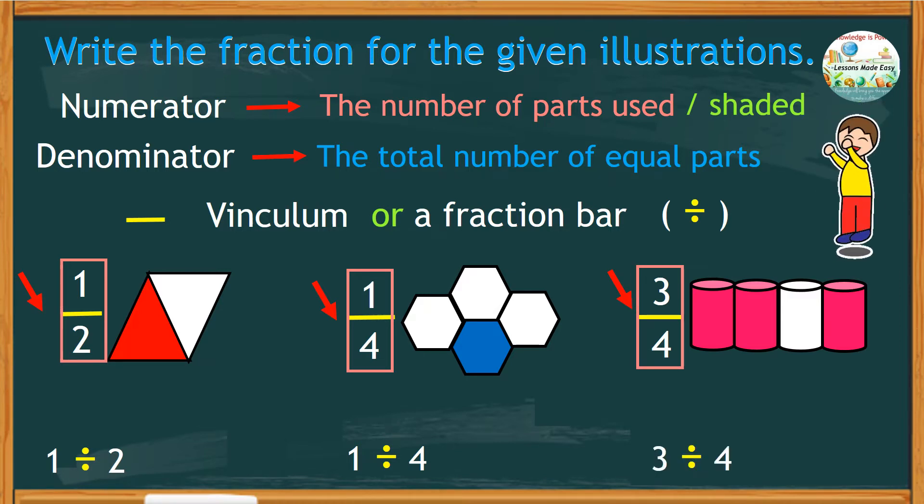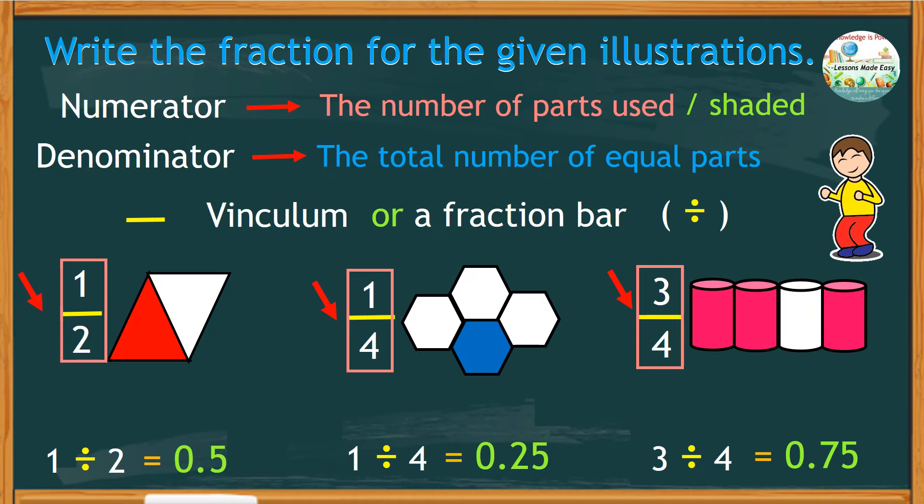And actually, if you divide this expression, you'll have answers like 0.5, 0.25, and 0.75, which are decimal numbers. These decimal numbers are less than one.